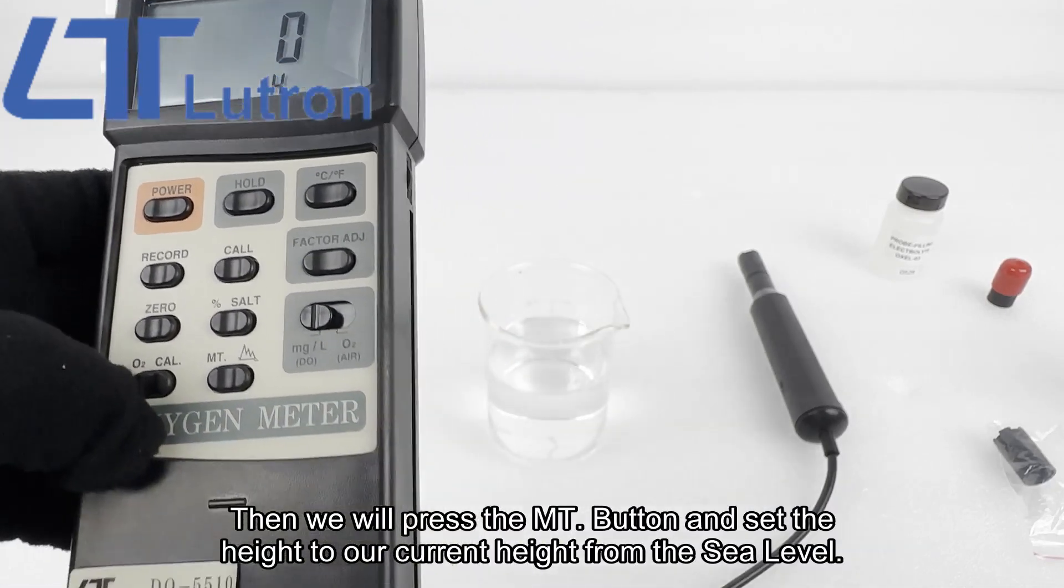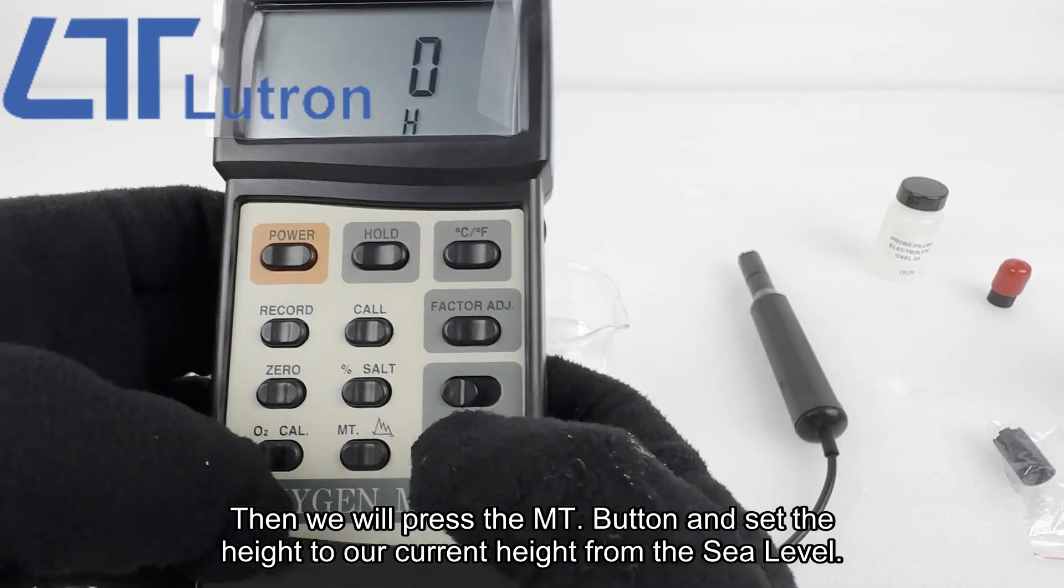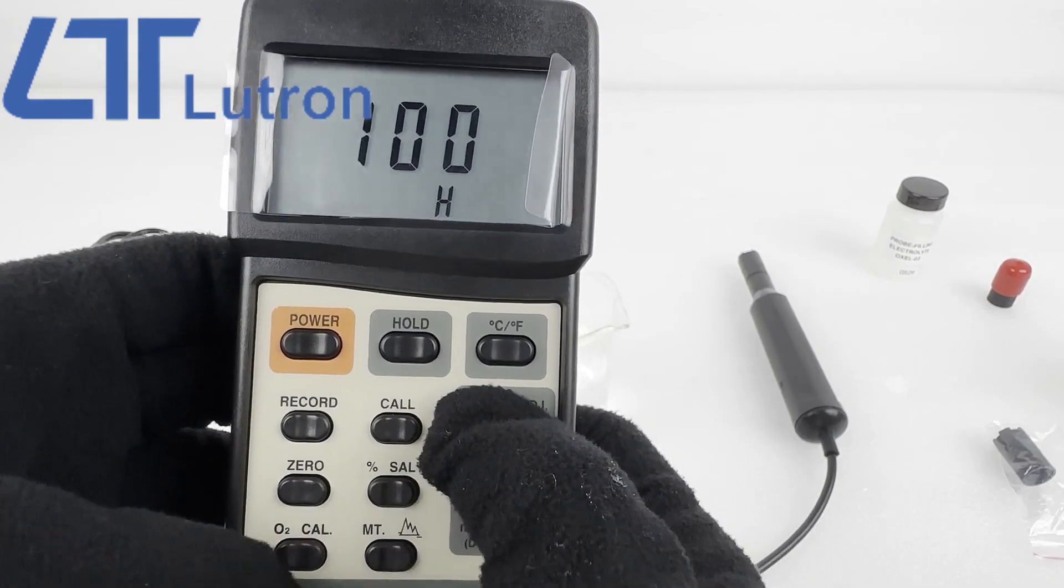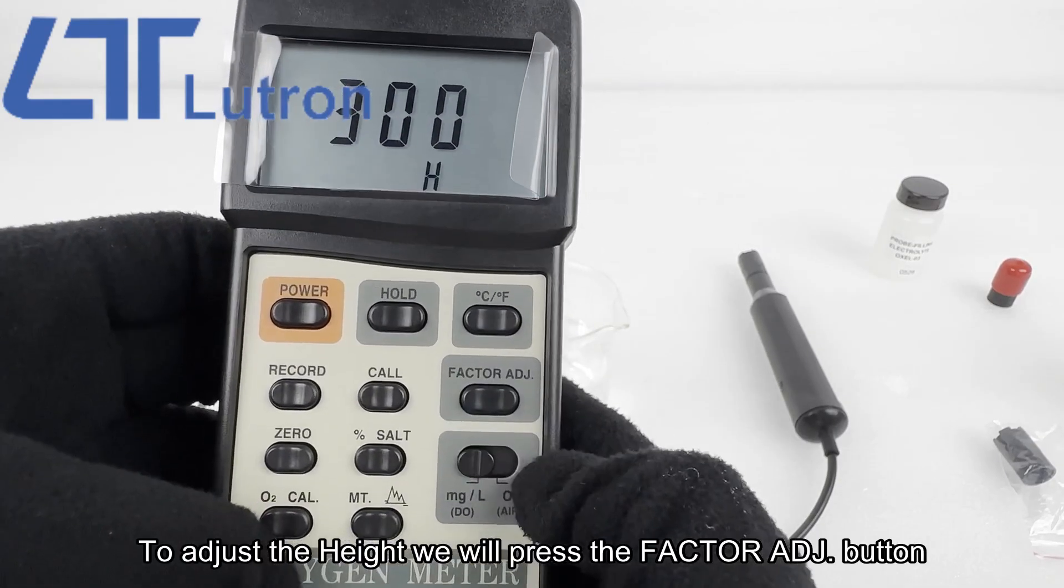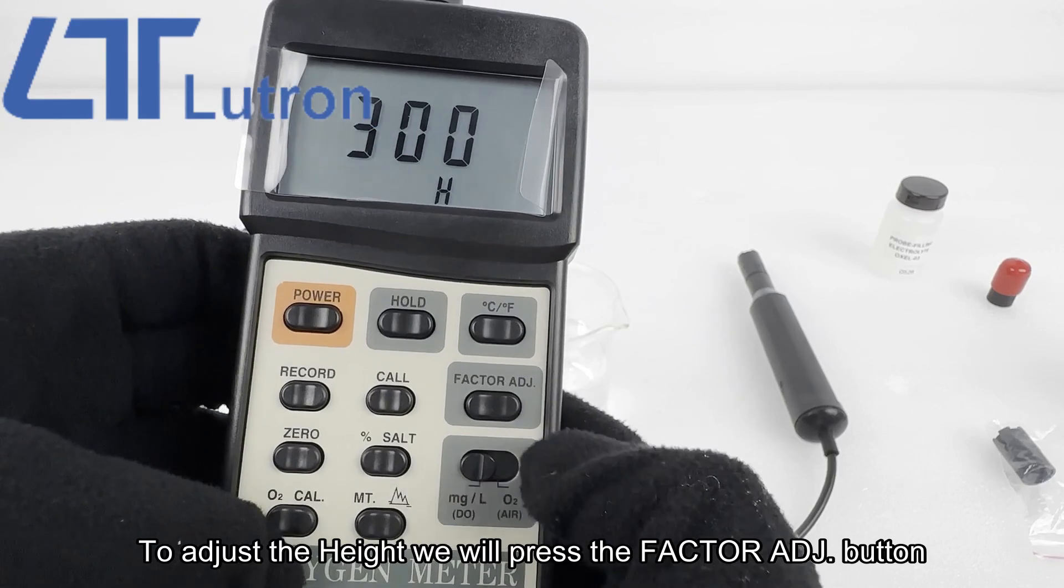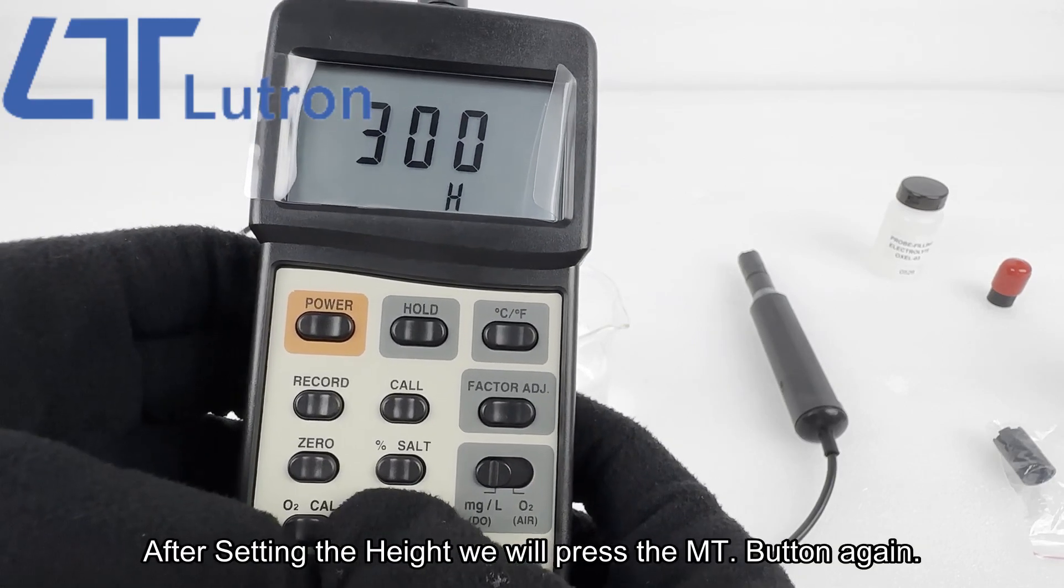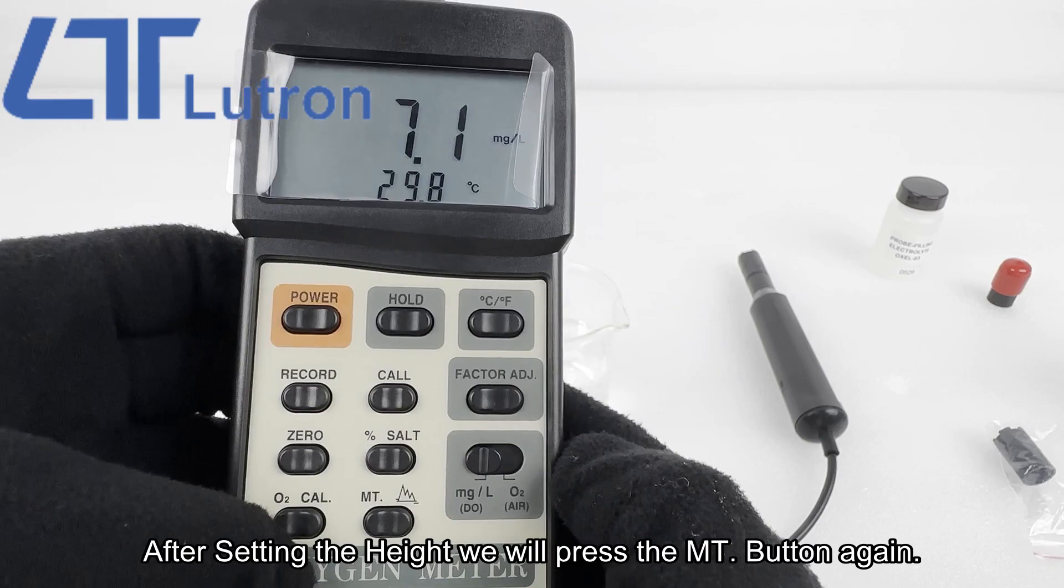Then we will press the mount button and set the height to our current height from sea level. To adjust the height, we will press the factor ADJ button. After setting the height, we will press the mount button again.